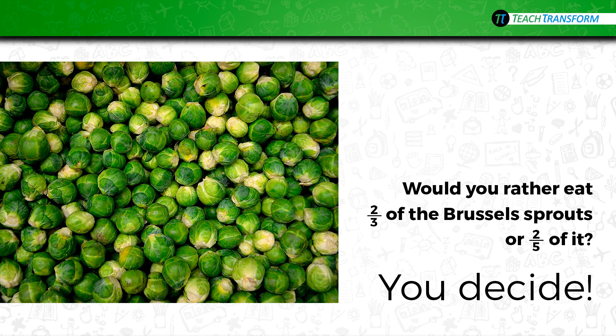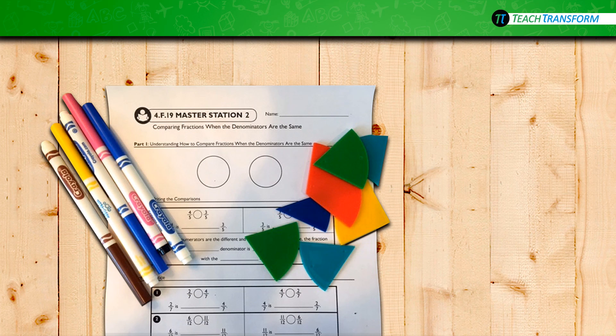The answer might be different depending on whether you like Brussels sprouts or not. At your station you have some fraction manipulatives, some colored pencils or markers, and a recording sheet called 'Comparing Fractions When the Denominators Are the Same.'